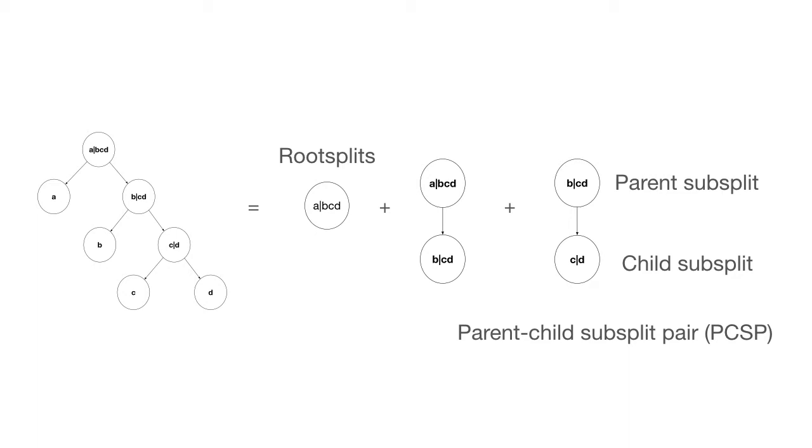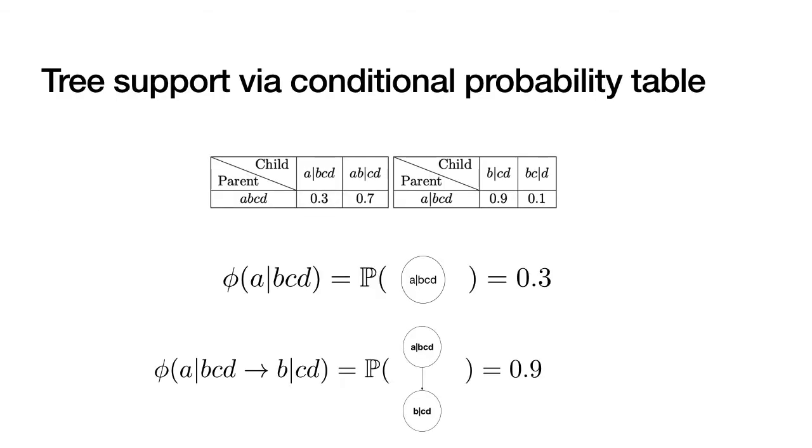The subsplit value assigned to a node depends on the value of the subsplit taken by its parent. So we refer to these as parent-child subsplit pair. We can determine the support set of the trees by specifying conditional probability table for each parent-child subsplit pairs. Here I am using Greek letter phi to denote the probability of observing a PCSP, which can be interpreted as conditional probability of observing a child subsplit given a parent subsplit, or the probability of observing a root split depending on the argument. We will call phi subsplit parameters. One thing I will stress is that the vertical bar here that's used inside phi is separating the clades, and they do not represent conditioning.